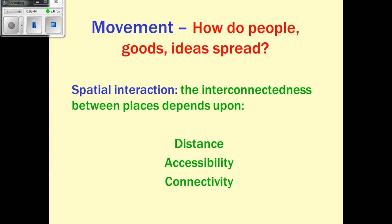Another theme of geography besides location and place is movement. This is not just how people move, but also goods, services, and ideas and how they spread. Spatial interaction — the interaction within a space — includes interconnections between places, which can change based on distance. Accessibility refers to how accessible goods or transportation networks are to people, and connectivity refers to how connected they are.